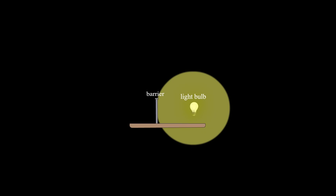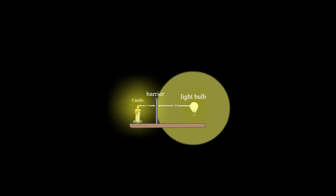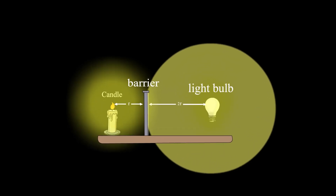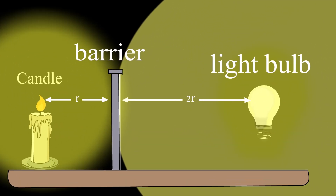For example, if we have a light bulb located at a distance equal to twice the distance of a candle from a barrier, so that the illuminance of the surface of the barrier facing the lamp equals the illuminance of the surface facing the candle, the light of the lamp must be four times stronger than the light of the candle. Therefore, the intensity of the light of the lamp must be four times stronger than the light of the candle.